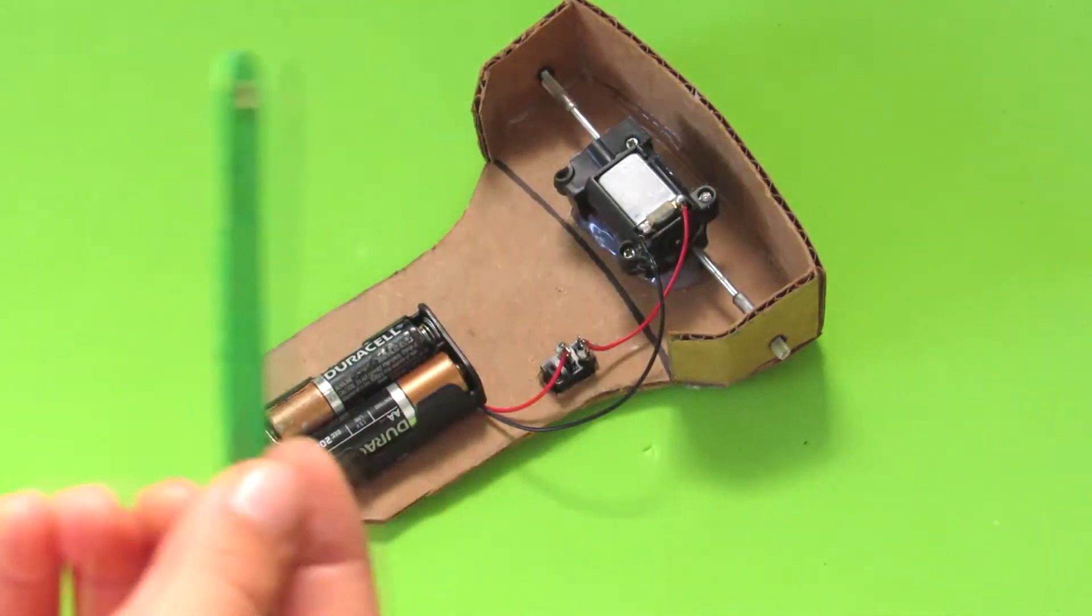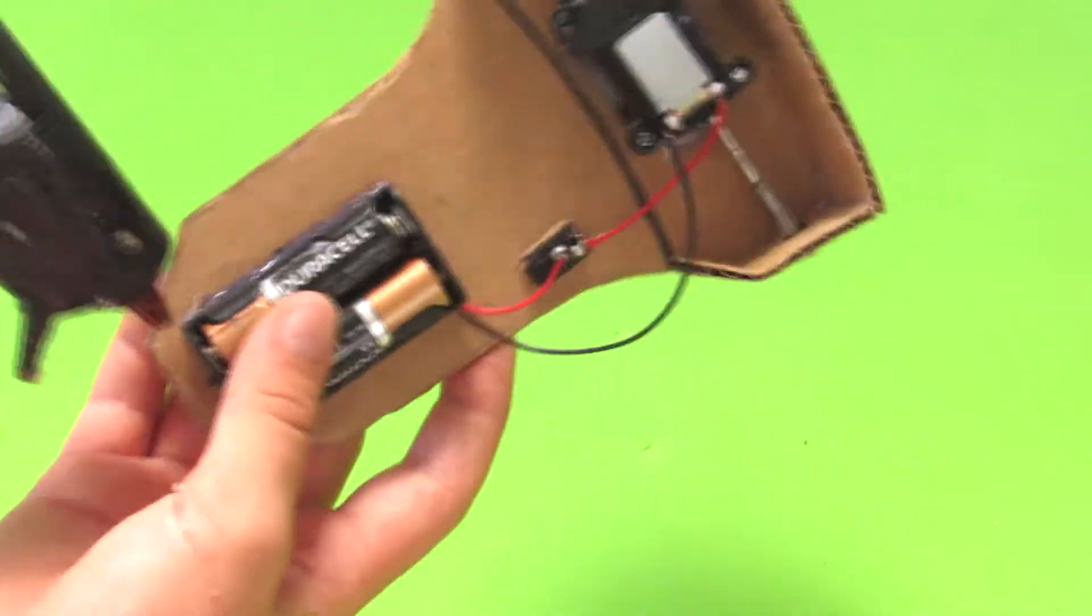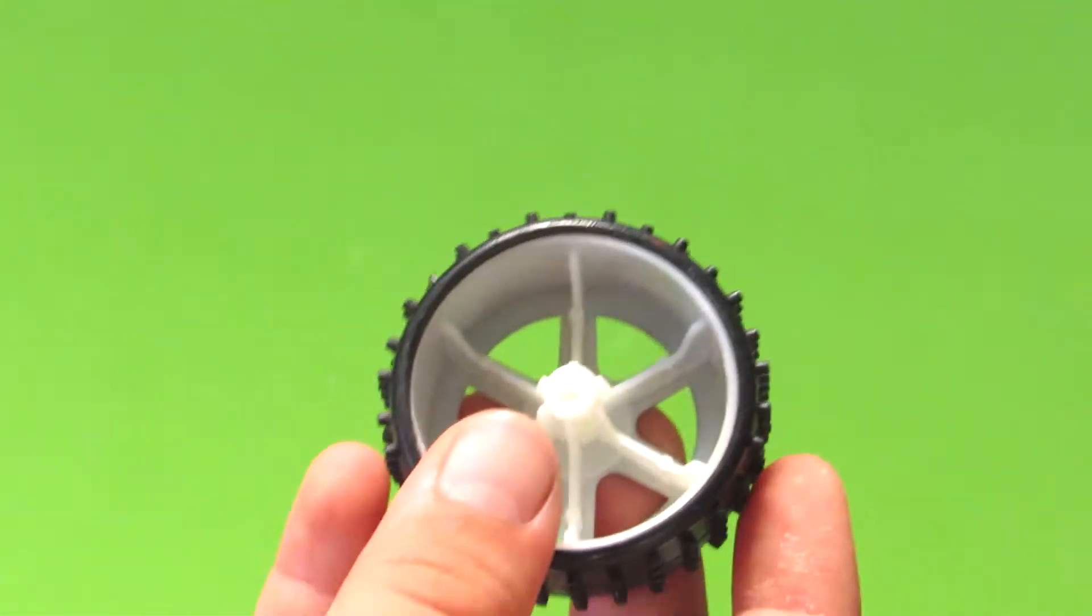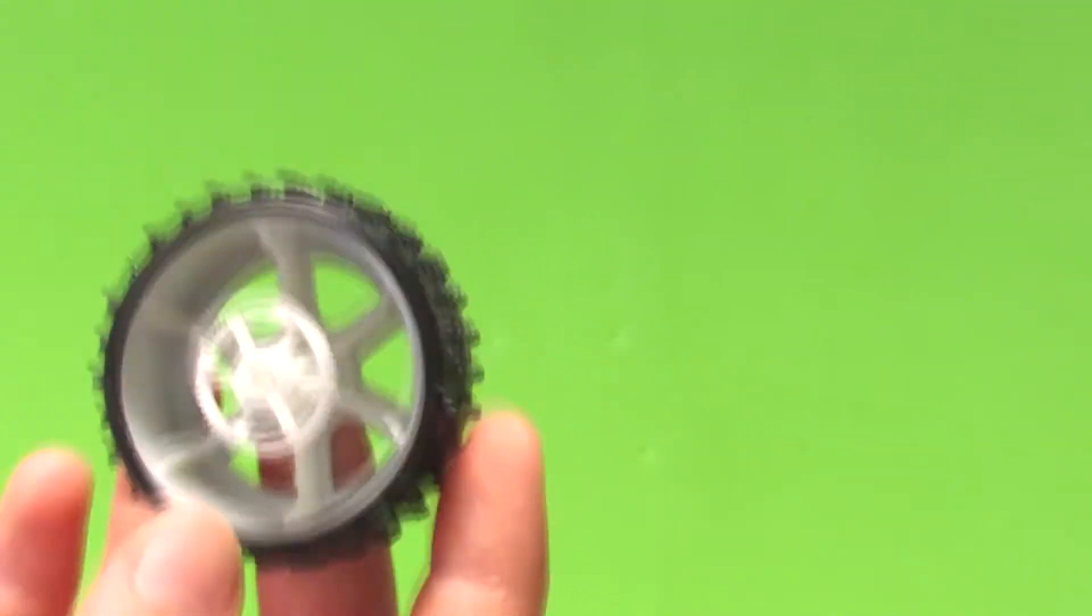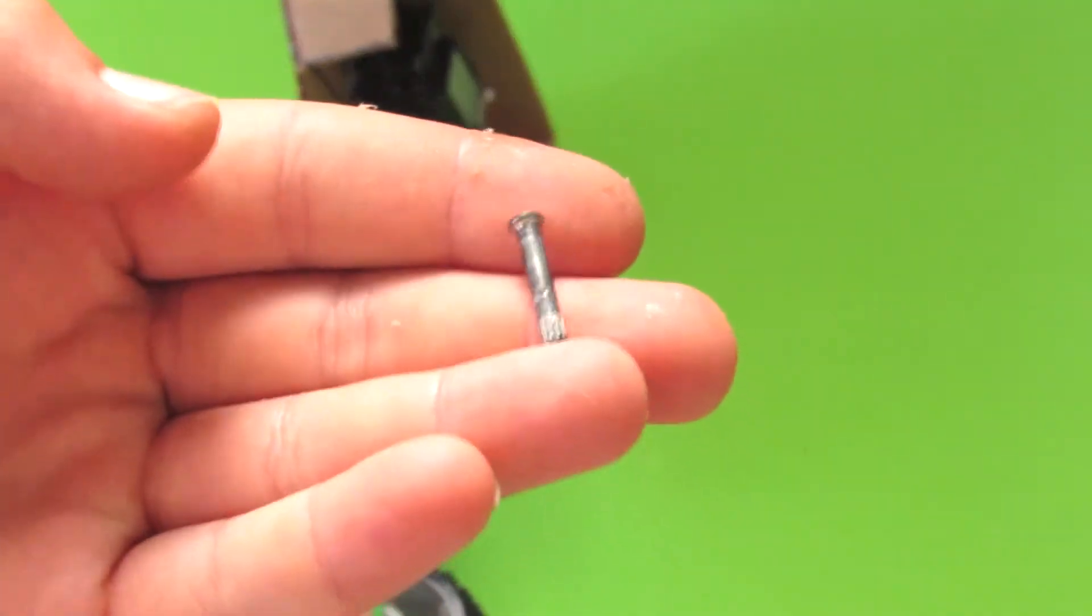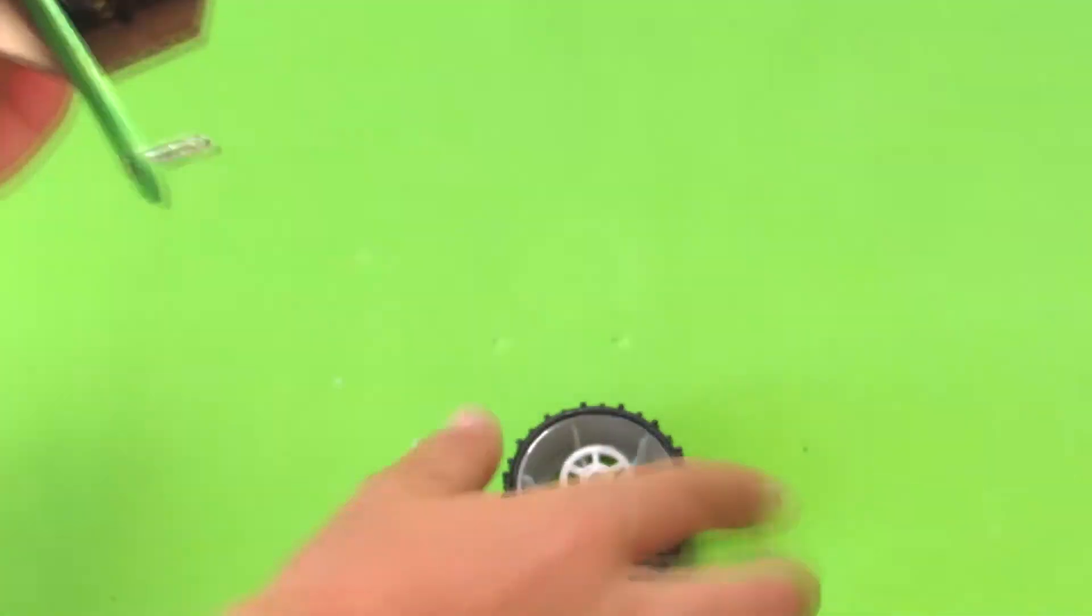Then glue your battery pack in place and also glue this popsicle stick with a hole in it. You're going to take a gear and your back wheel, rear wheel, and you're going to put a bit of glue on it and also put this gear on. Now you're going to attach your wheel using this little steel pin and also make sure that it can spin.